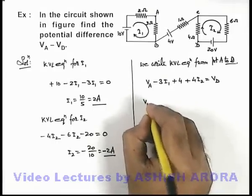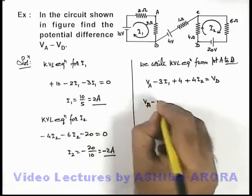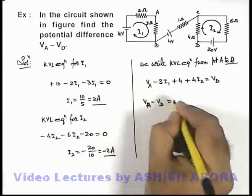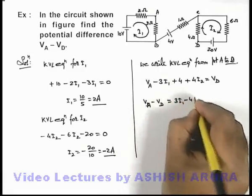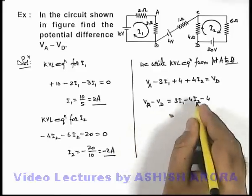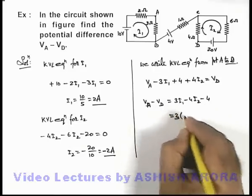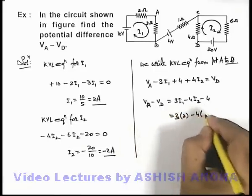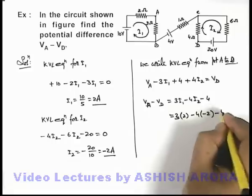So in this equation if we simplify it for V_A minus V_D, you can see here we're getting 3i_1 minus 4i_2 minus 4. And if we substitute the values of i_1 and i_2, it'll be 3 multiplied by 2 minus of 4 multiplied by minus 2 minus 4.